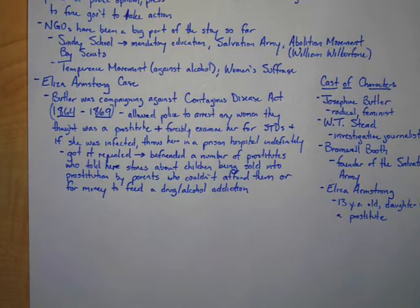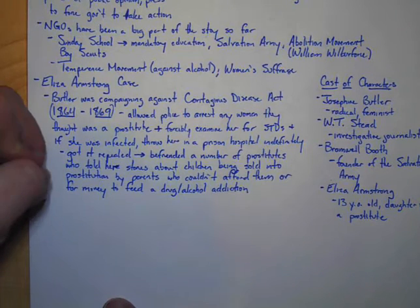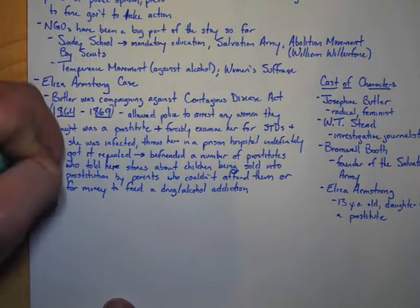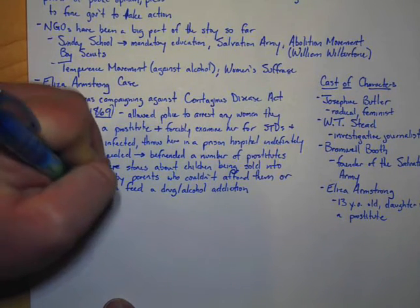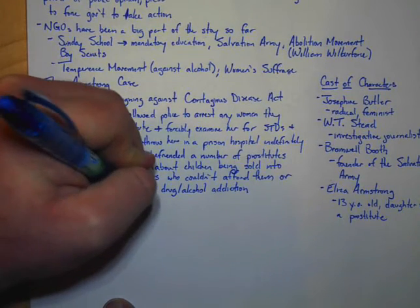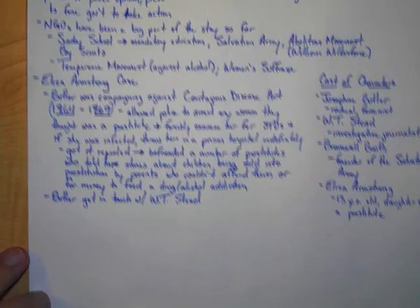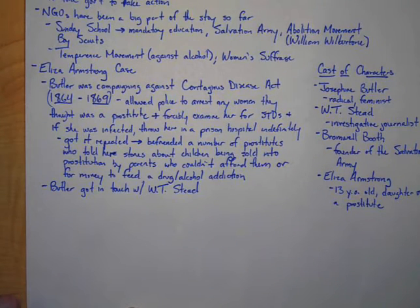So this got Josephine Butler moving again. She decided she needed to do something about this and rightly so. At that point, Butler got in touch with a friend of a friend and managed to get in touch with Stead, the journalist, and told him the story and he decided he needed to do something about it too. So now we're going to pick the story up with Stead.